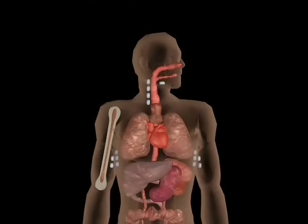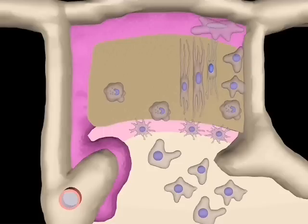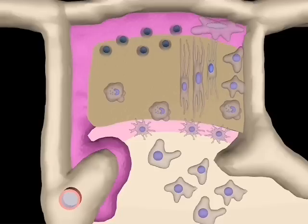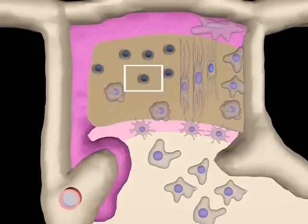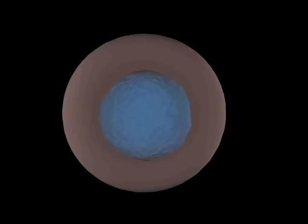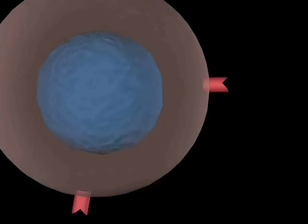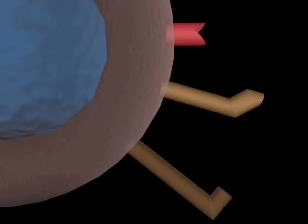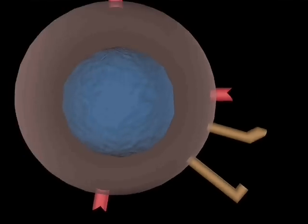Within the thymus, pre-T-cells migrate to the subcapsular region. These cells then divide rapidly and pass into the cortex. At this time, each will produce its particular diversified T-cell receptor. This pre-T-cell must also generate two other receptors, CD8 and CD4, which will enable it to bind to the major histocompatibility complex molecules, which present antigenic peptides.